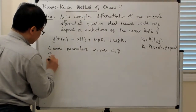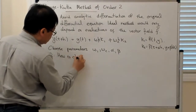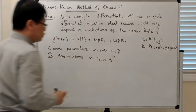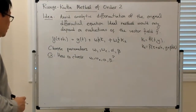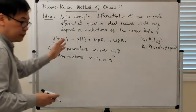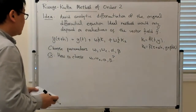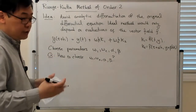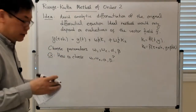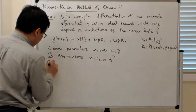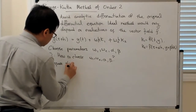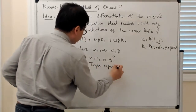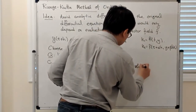The question is how to choose w1, w2, α, and β. What I'm going to do is compare this approximation with the Taylor series approximation of the solution. Of course we don't know the exact solution, so we compare it with the Taylor expansion of the exact solution.